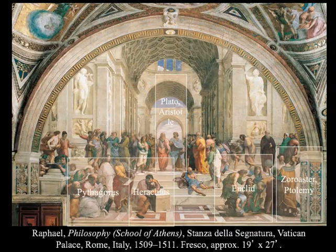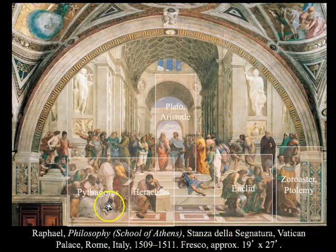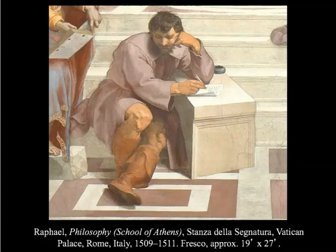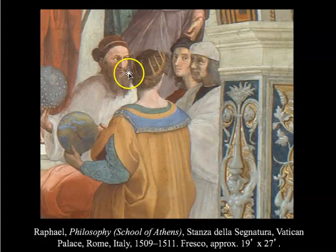There are numerous characters and artistic figures — Euclid, Heraclitus, Pythagoras — all working and discussing their different mathematics and philosophies. Zooming in on Heraclitus — this contemplative figure writing and thinking — this is meant to be a portrait of Michelangelo, showing the connection between the Sistine Chapel and Raphael's work. Raphael also painted himself on Aristotle's side — this little portrait is of him.